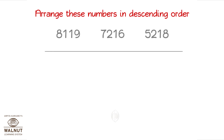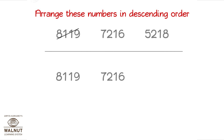Now, let us arrange these numbers in descending order. You pick the biggest number and place it first, then the next biggest, and then the last one. So, we get the numbers in descending order.